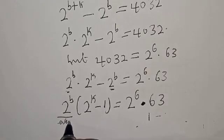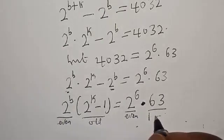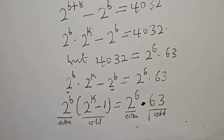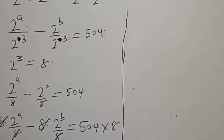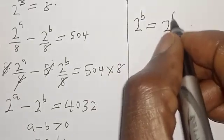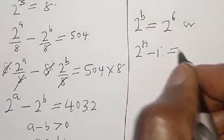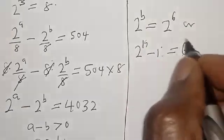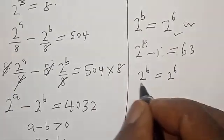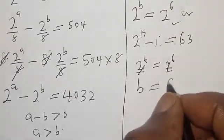Now from here: the left side has an even part and an odd part; the right side also has an even part and an odd part. Let's compare the two. We have 2 raised to power b equal to 2 raised to power 6, and 2 raised to power k minus 1 equal to 63. From here, we have 2 raised to power b equal to 2 raised to power 6. We have the same base, so b equals 6.